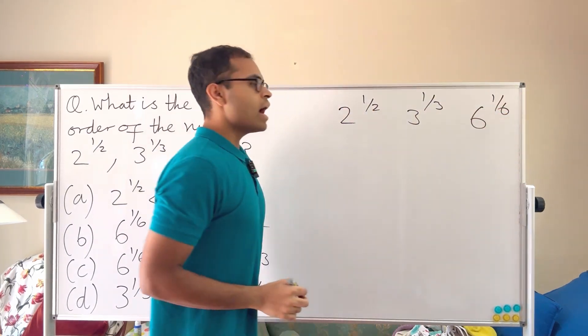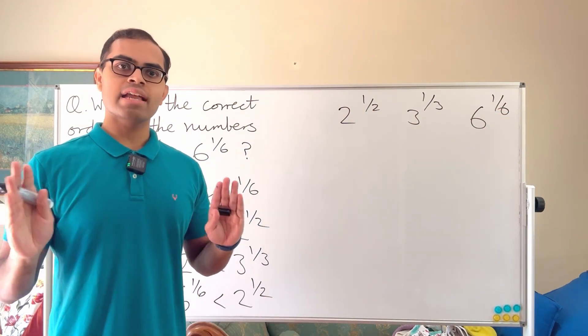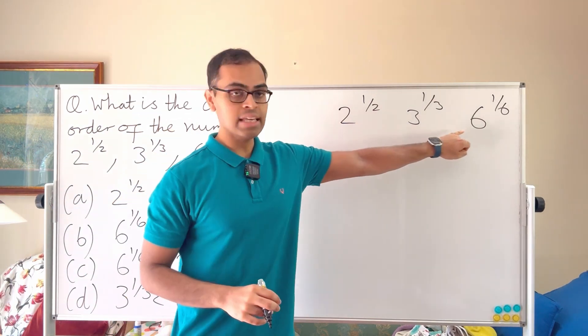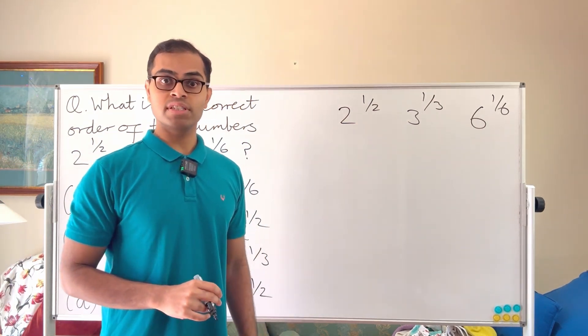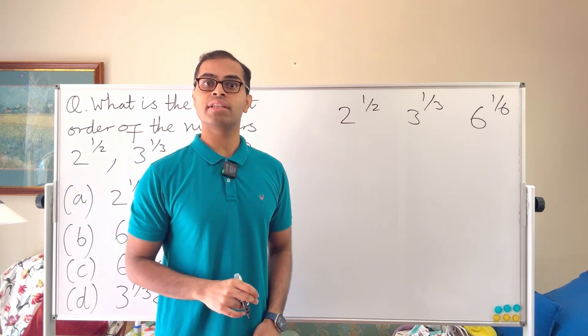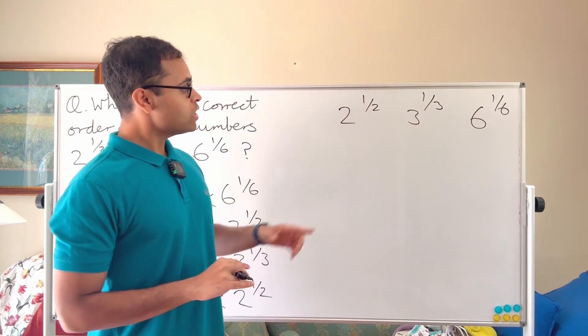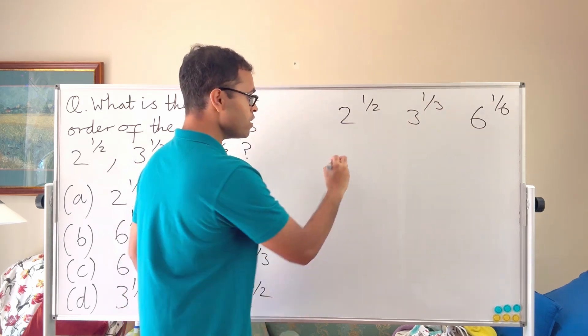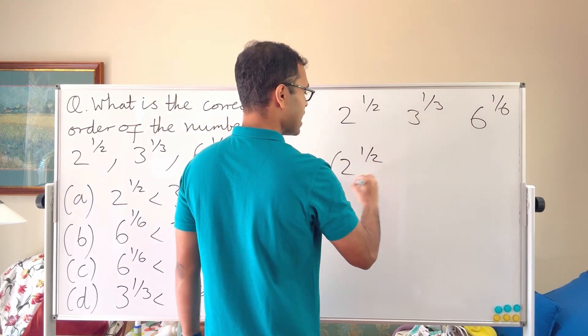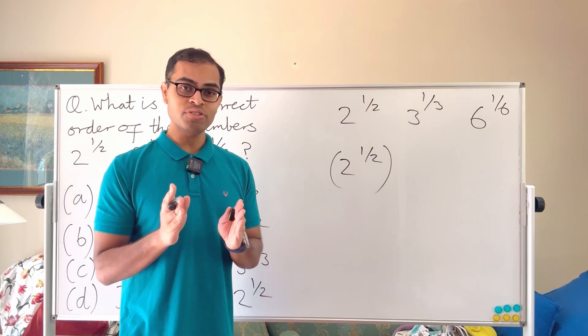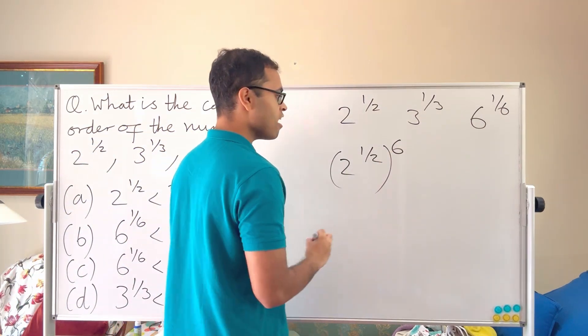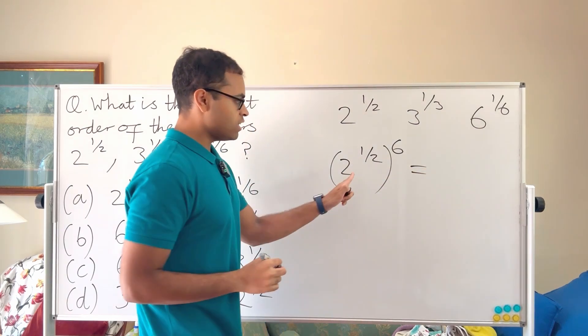So I'm going to power 2 power half by 6, and power 6 power one over six by 6, and 3 power one third by 6. Why? Because 6 has two and three as factors. When we power 2 power half by 6 - and at the end of the video I'm going to show you some interesting insights beyond this, so watch till the end for that.